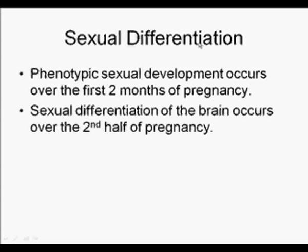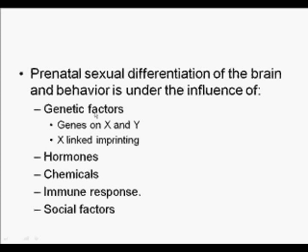Phenotypic sexual development occurs over the first two to three months of pregnancy but continues well through pregnancy and beyond. Sexual differentiation of the brain occurs over the last half of pregnancy, and we really don't know a lot about the factors that allow for it. In terms of prenatal sexual differentiation, genetic factors, sex-linked imprinting, hormones, chemicals, immune responses, and societal factors all play a role, but how they come together to allow for sexual differentiation of the brain and behavior is poorly understood.